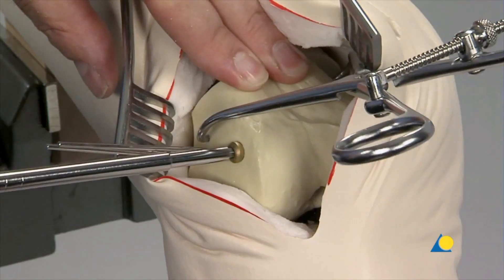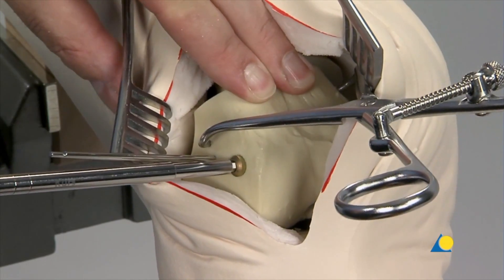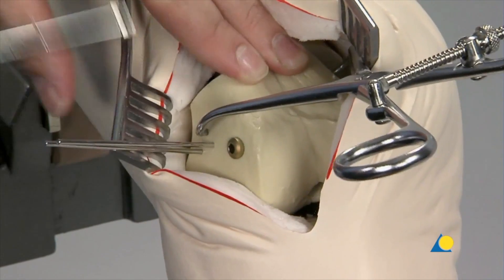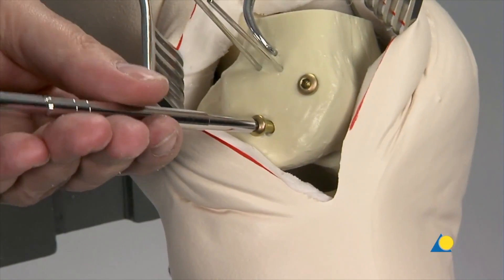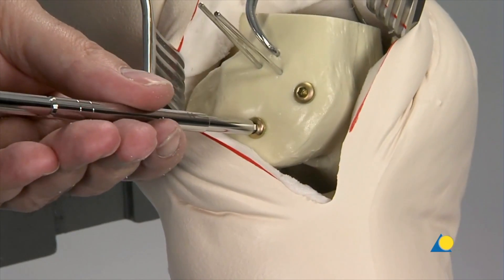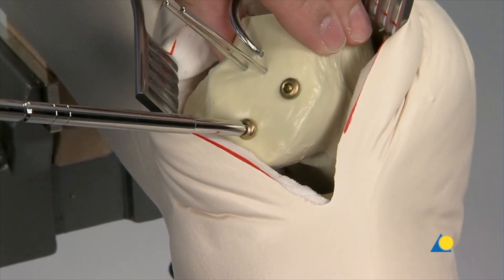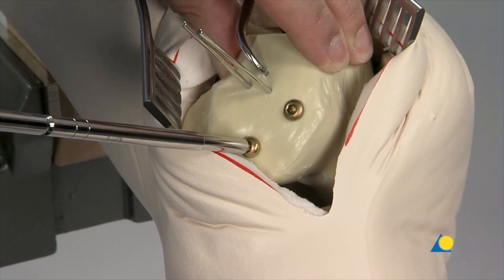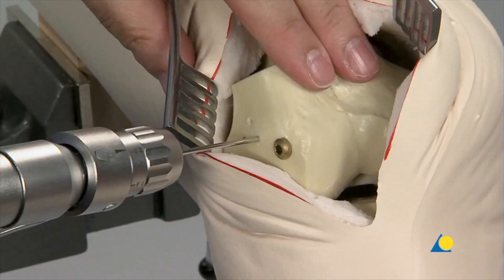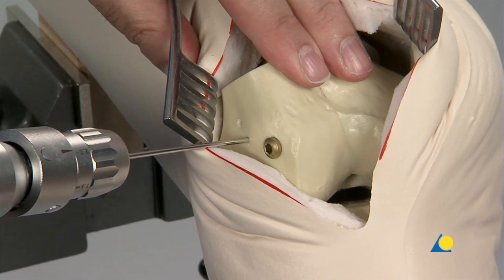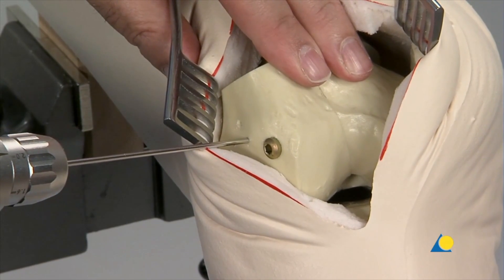The appropriate length 6.5mm cancellous bone screw is inserted. For older persons with bad quality bone, a washer can be added. A second 6.5mm cancellous bone screw is inserted in the same manner to ensure rotational stability. The two K wires are now removed from the joint block.